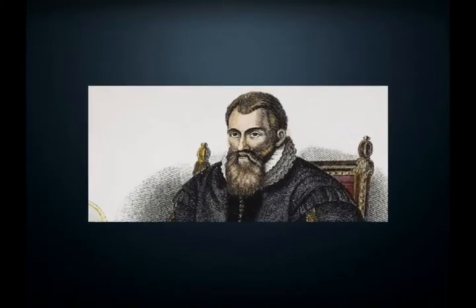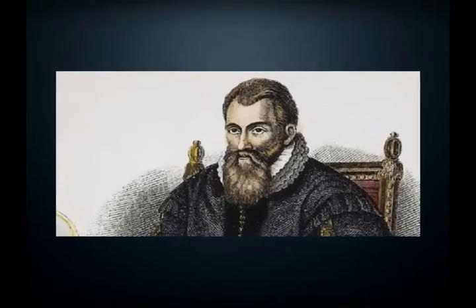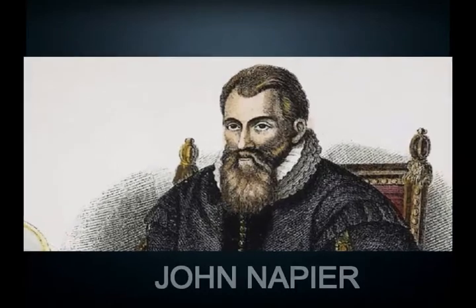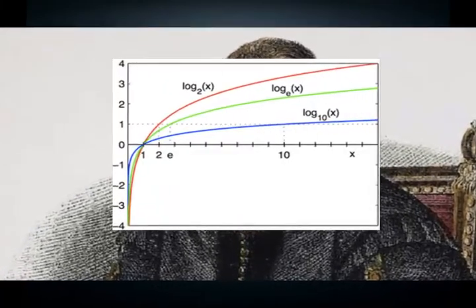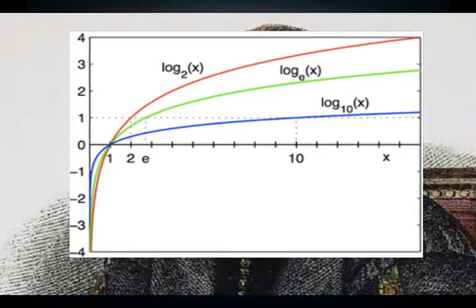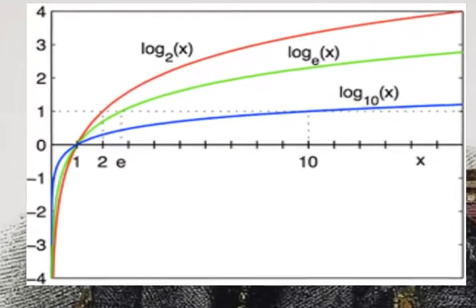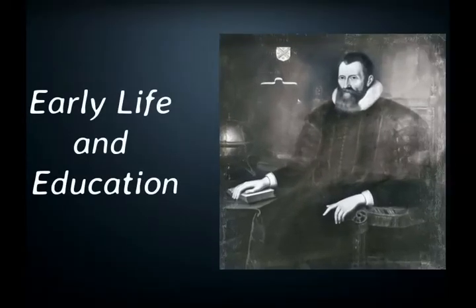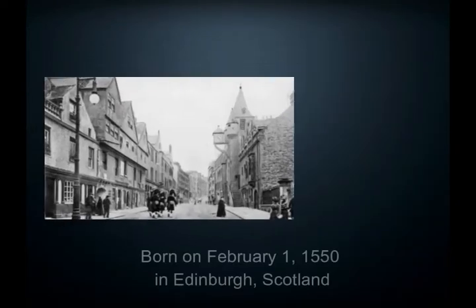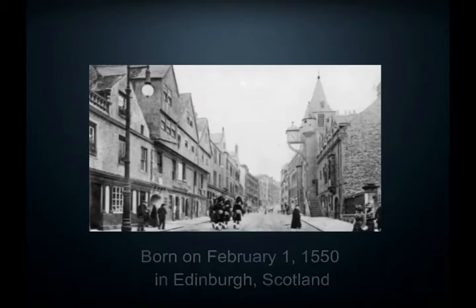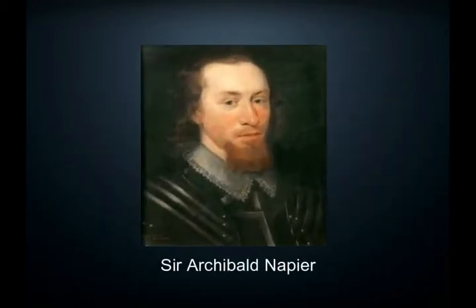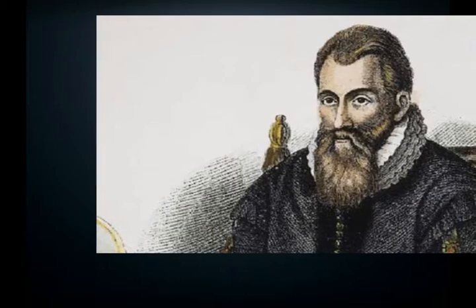In this video, let's learn about the famous Scottish mathematician John Napier, who is best known for his invention of logarithms, which are used to help with mathematical calculations. John Napier was born into a wealthy family on February 1, 1550, in Edinburgh, Scotland. His father was Sir Archibald Napier, and John was a very intelligent child.